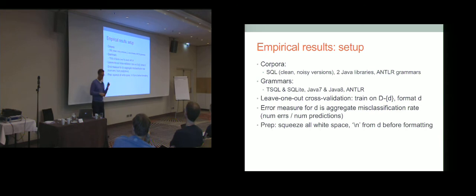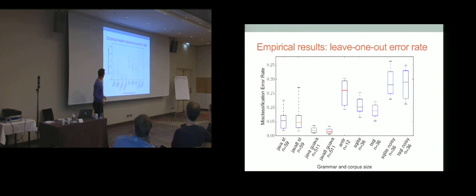Compute the ratio divided by the number of tokens. And you have an error rate for that file. Then you get an aggregate error rate. And if you do that, leave one out cross validation for every document in your corpus. And just to be clear, when we're doing formatting, we are computing and injecting every bit of white space. So we have squeezed it all out before we do any formatting.